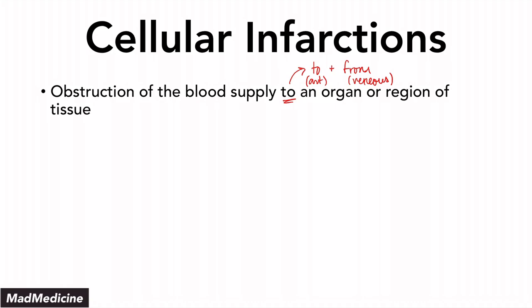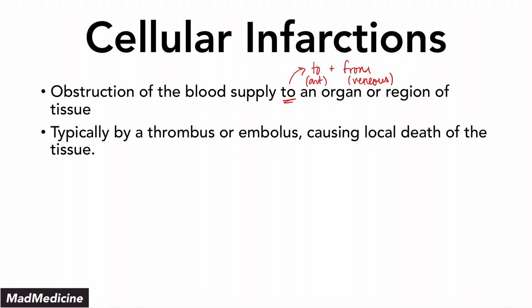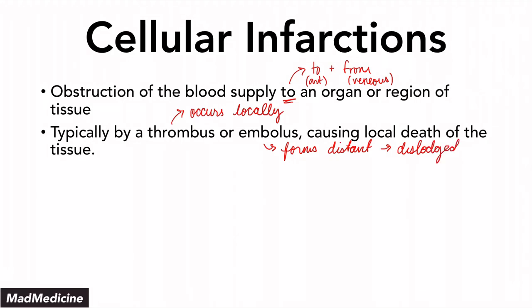Typically, this can occur because of a thrombus or an embolus, and it can cause local death of the tissue near that thrombus or embolus. Just a quick recap: a thrombus occurs nearby — it's a blockade that occurs locally. An embolus actually forms distantly, forms somewhere else, and it can become dislodged and cause an infarction somewhere else. It can move and cause the infarction.